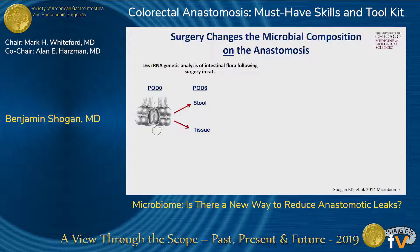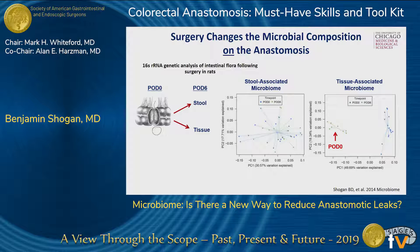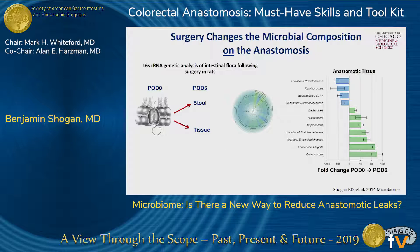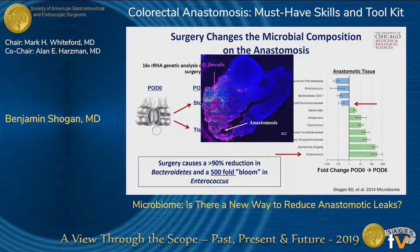What about right at the site of anastomotic tissue? We did these experiments in mice and rats and looked at the community structure at the time of surgery compared to post-op day six. This is a principal component analysis plot — each dot represents a bacterial community structure; when they're close to each other they're similar, when further away they're different. Looking at the stool, there isn't much difference between post-op day six and day zero. But when you look at the anastomosis, the community on post-op day zero is dramatically different from the community stuck onto that anastomotic tissue. What we found is an increase in enterococcus — bad bacteria. Histologically, you can see the anastomotic tissue with enterococcus binding to it in purple. Surgery alone causes a 90% reduction in bacteroides and a 500-fold bloom in enterococcus.